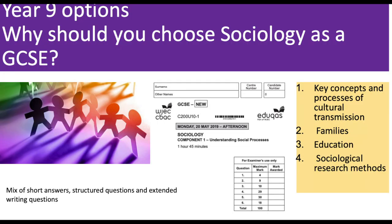In Sociology you will be sitting two papers at the end of Year 11. Component one is the paper in which you will be learning about some of the key concepts and processes of culture and how that influences your identity.